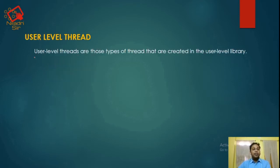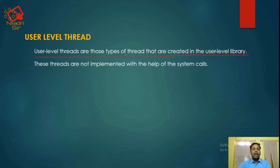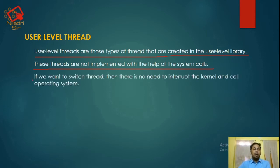What is a user-level thread? User-level threads are those types of threads that are created in the user-level library. These user-level threads are not implemented with the help of system control. If we want to switch threads, there is no need to interrupt the kernel and call the operating system.